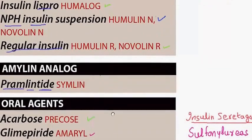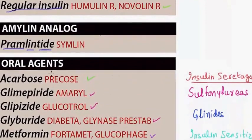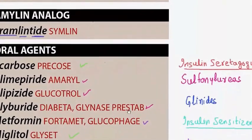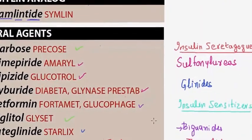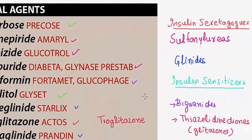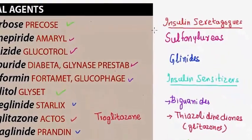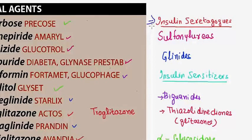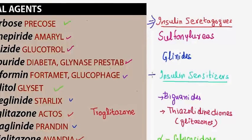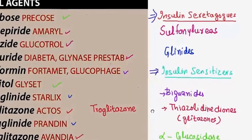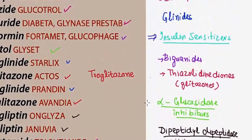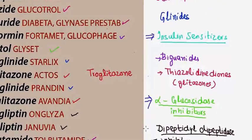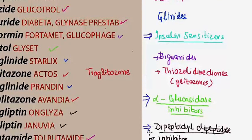Now comes an important class of drugs called oral agents or oral hypoglycemics. In the oral hypoglycemics we have insulin secretagogues, insulin sensitizers, alpha-glucosidase inhibitors, and finally dipeptidyl peptidase-4 inhibitors.